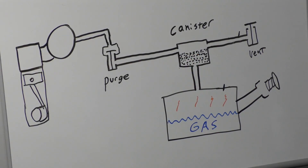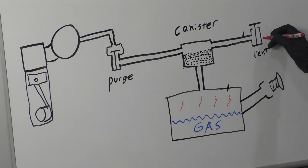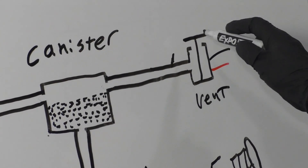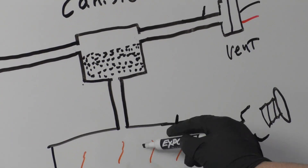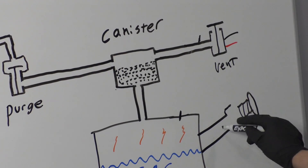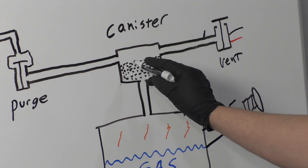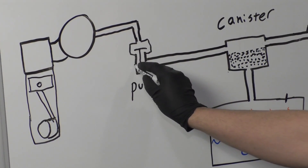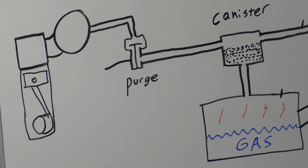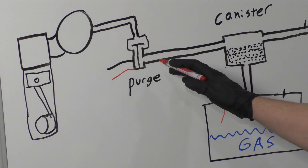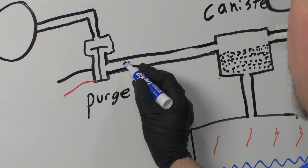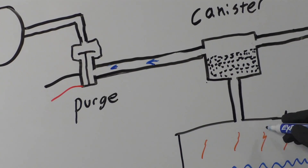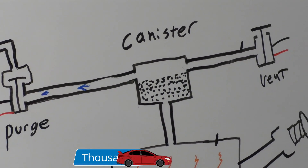When the car starts and it wants to engage the EVAP system, it's going to send power and ground to the vent, which is normally open, and close that vent. The vapors are in this area — you want to keep them from escaping out of the gas cap. They'll go through the charcoal canister, but we want to put a vacuum on the system. So the computer is going to command the purge valve on, which will open — normally the purge valve is closed. A vacuum is then created going toward the intake, pulling the fuel vapors into the canister, while this valve remains closed.